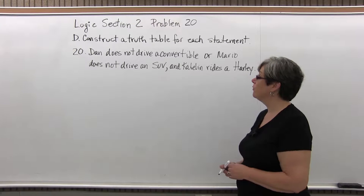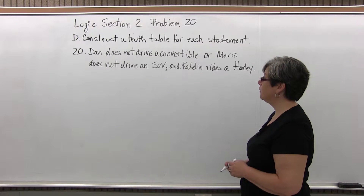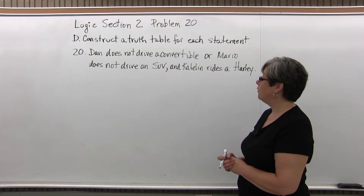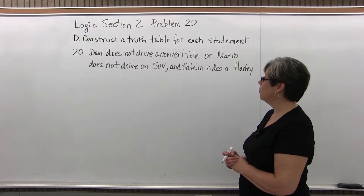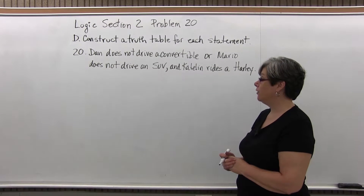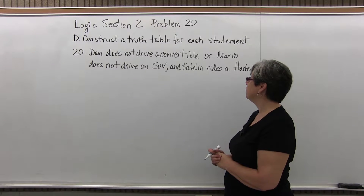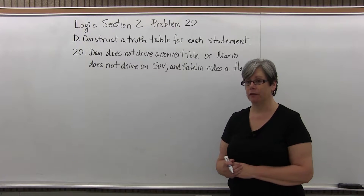Construct a truth table for statement 20: Dan does not drive a convertible, or Mario does not drive an SUV, and Caitlin rides a Harley.